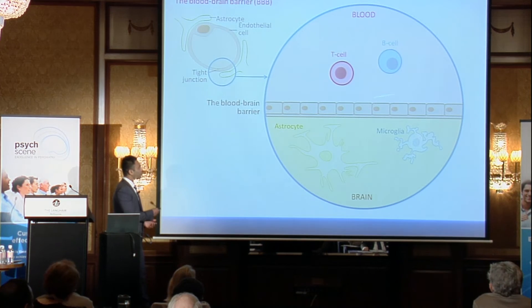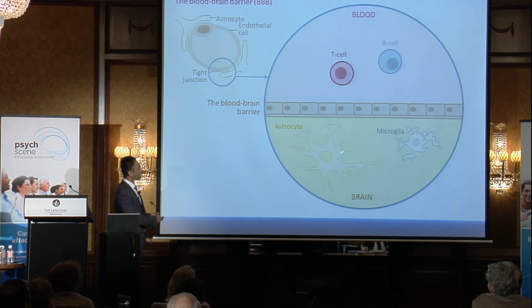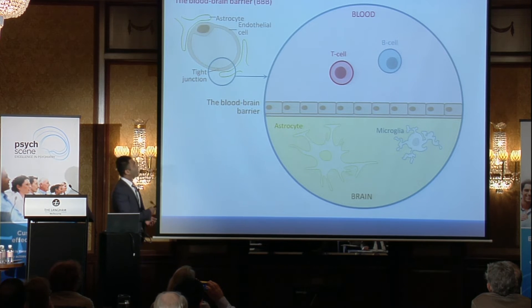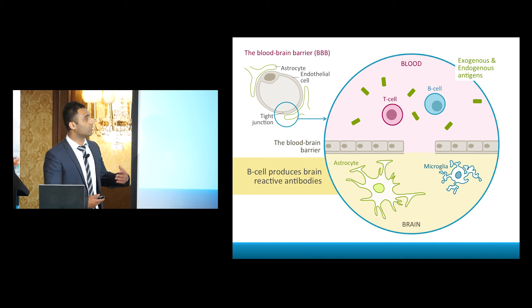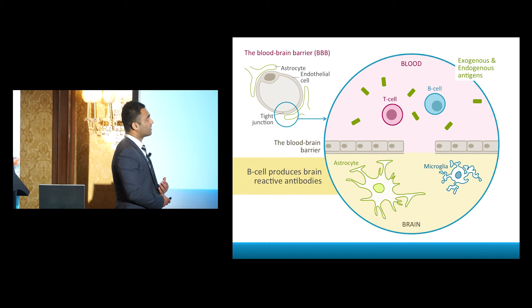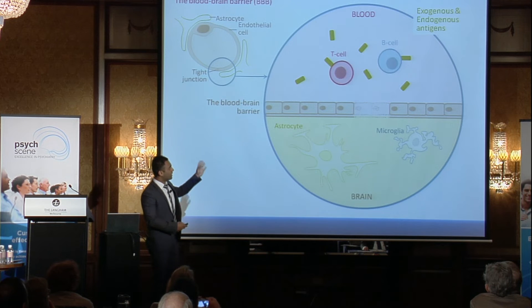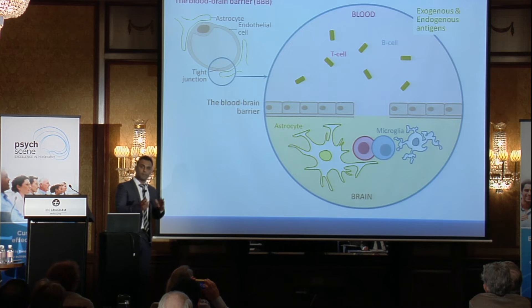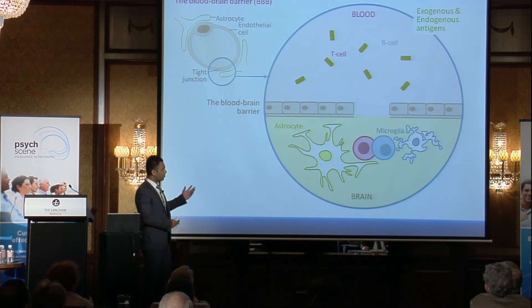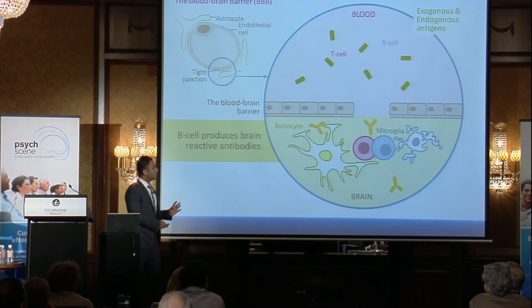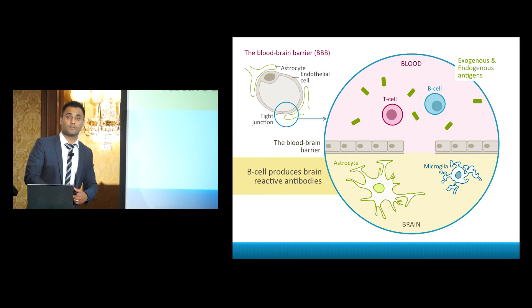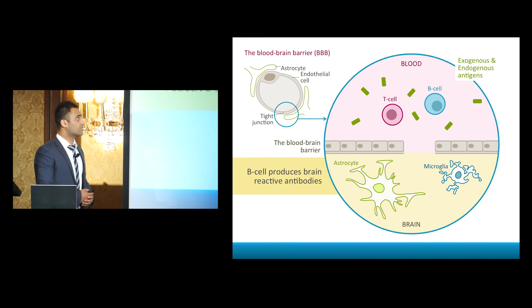Looking at a diagram of this, we have the brain with two key immune cells: microglia and astrocytes, and the peripheral system with T cells and B cells. Exogenous and endogenous antigens — PAMPs and DAMPs — can activate T and B cells, which can then interact with the endothelial system and pass through the blood-brain barrier. Once through, they can trigger an immune response within the CNS, which can be automatically amplified in an almost self-contained system without further external stimuli. B cells can pass through and produce brain-reactive antibodies, while T cells can independently cause damage.